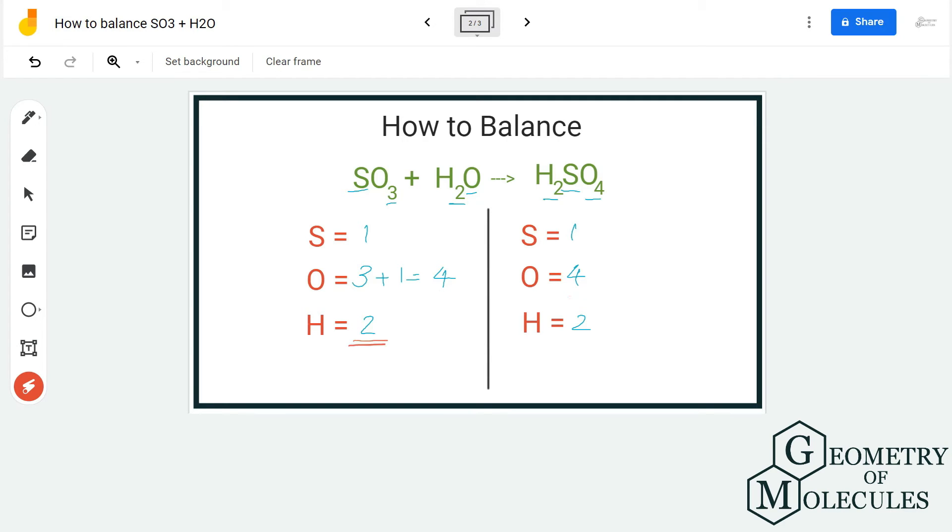This equation itself is balanced, but what people generally mess up during balancing equations is not counting the numbers of oxygen and hydrogens properly. As you can see, on the reactant side, oxygen is present in both compounds. Make sure to count the number of oxygen and hydrogen atoms on both sides to not miss out on any atom.